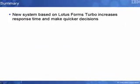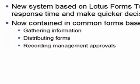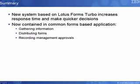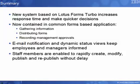Their new automated system, based on Lotus Forms Turbo, allows the organization to increase response times and make quick decisions as a result of the implementation of an automated electronic forms system. Now the basic steps of gathering information, distributing electronic forms for approval, and recording management decisions and authorizations are all contained in one common form-based application. With the ease of email notification and the dynamic status views, Lotus Forms Turbo helps keep all EPIS Retail employees and managers informed throughout the process. Turbo also helps to eliminate misplacement of forms and lengthy delays, and allows EPIS Retail staff members to rapidly create and modify their forms and publish or republish them without delay.